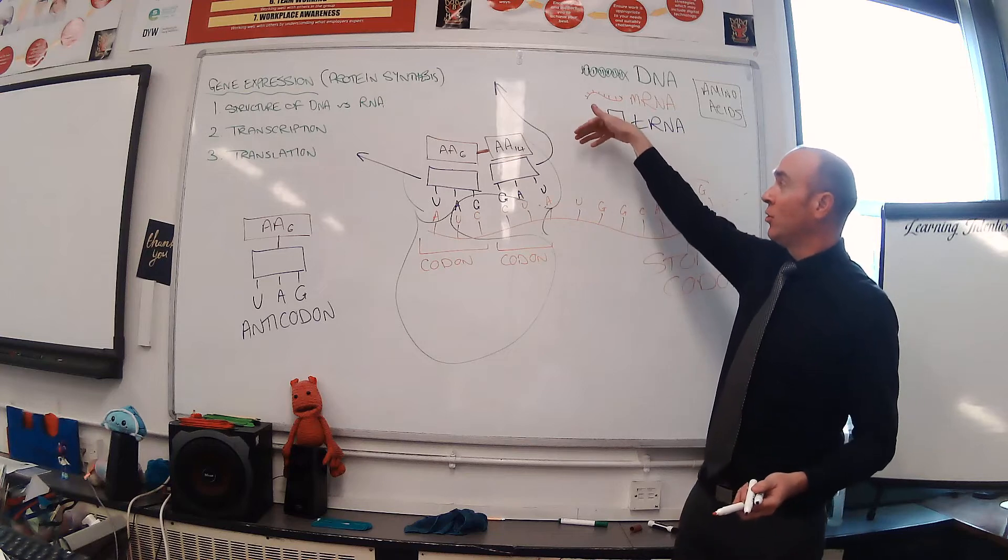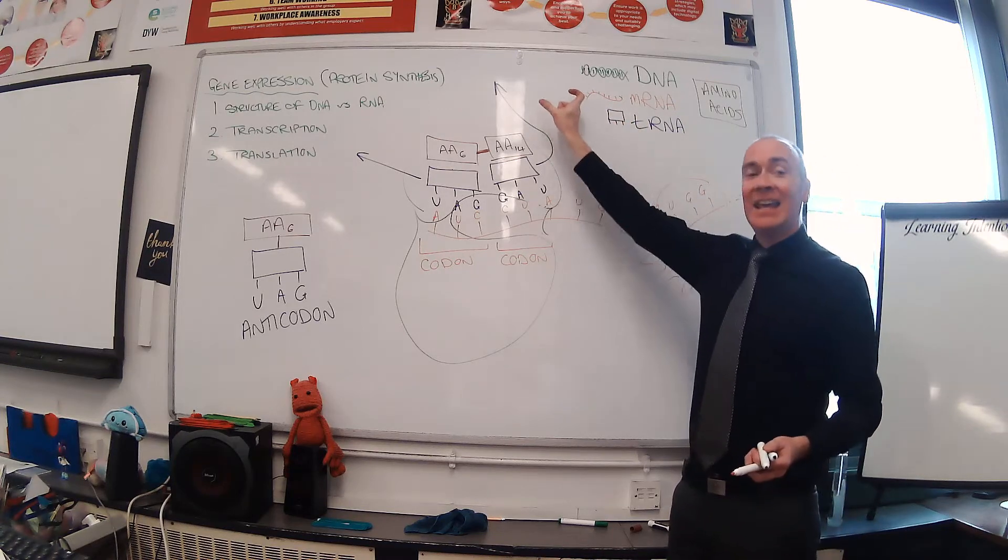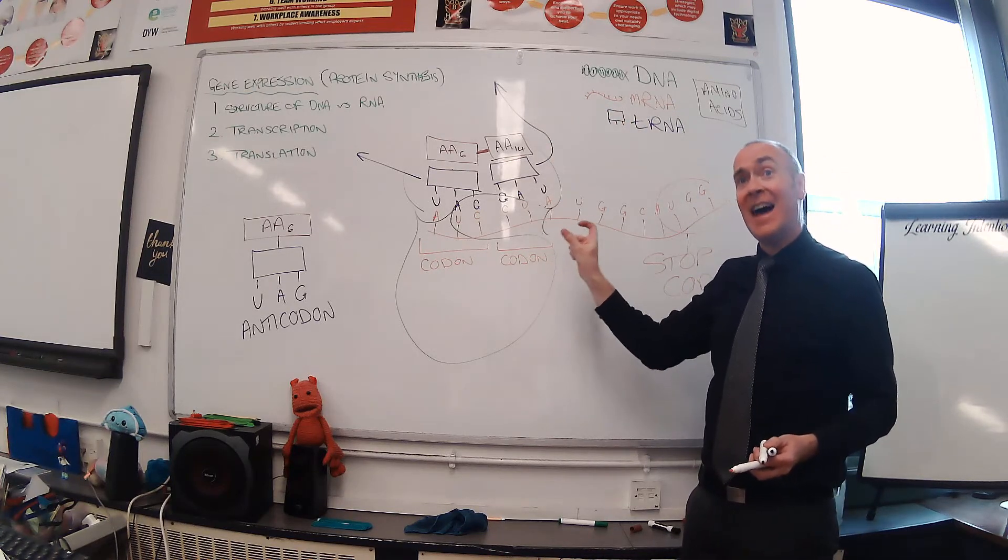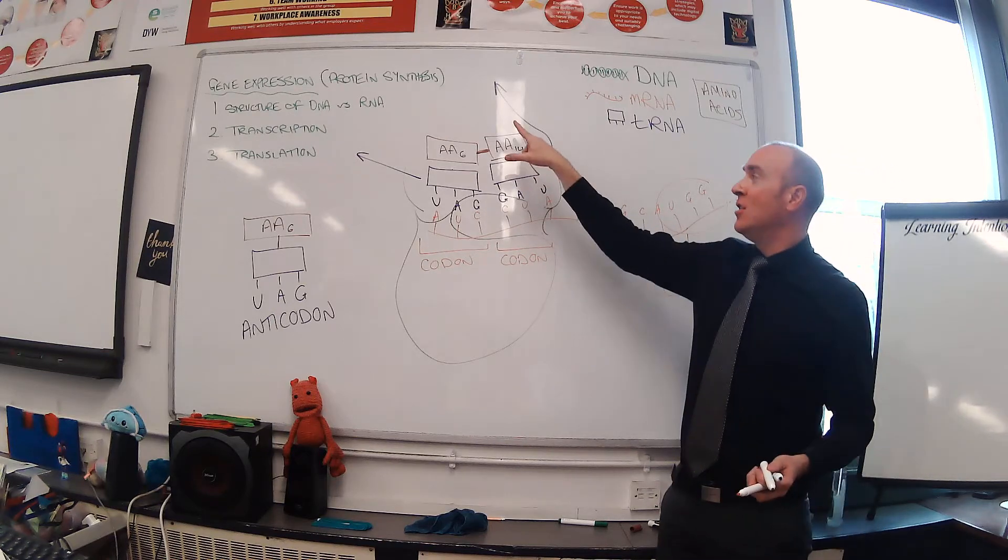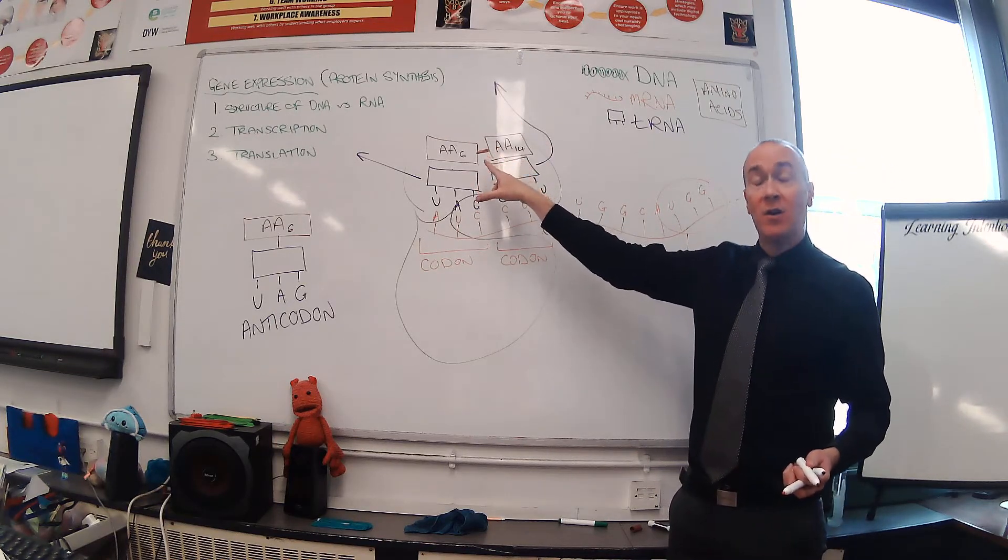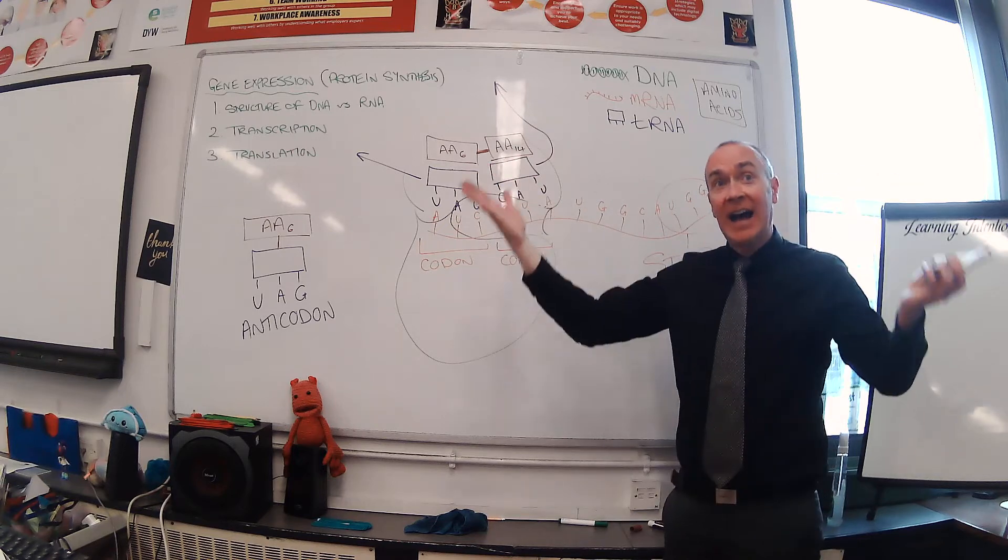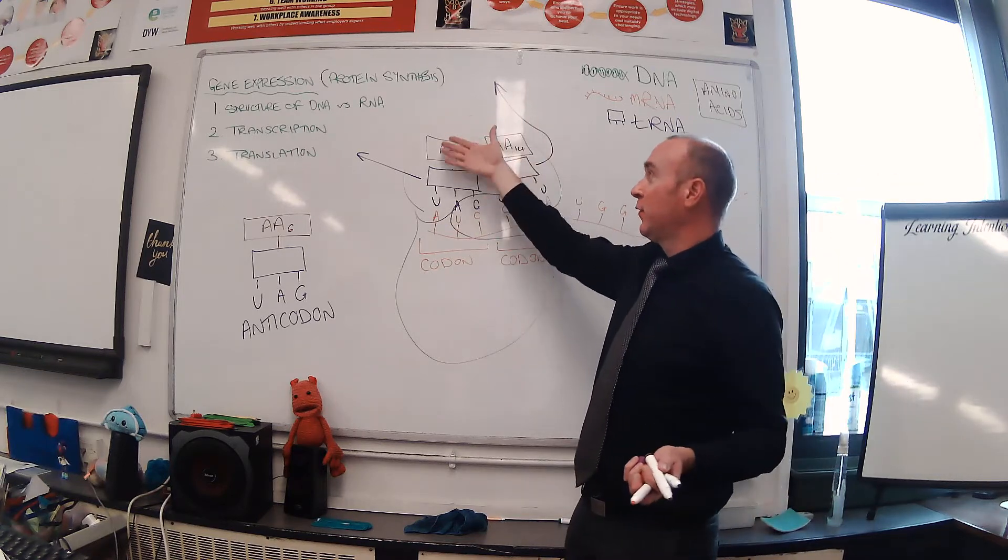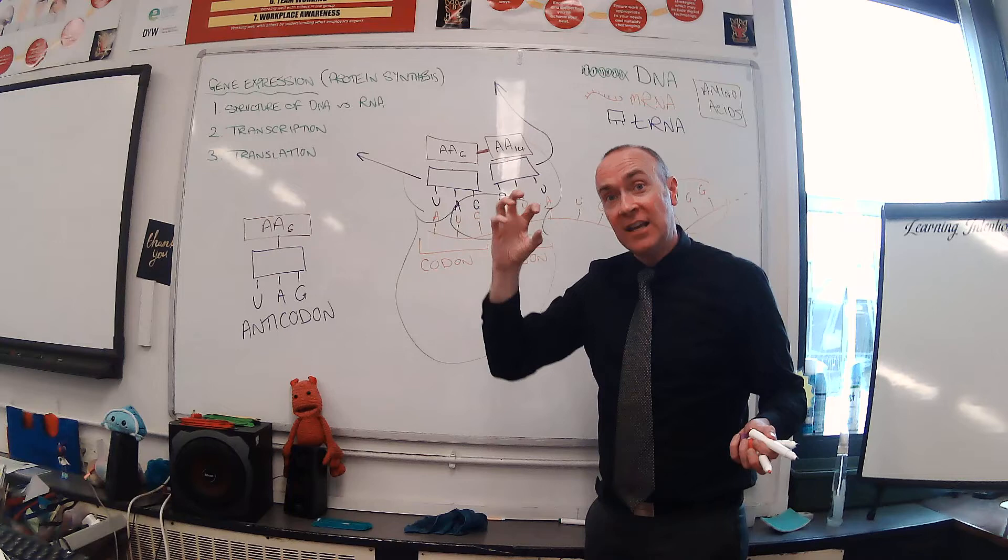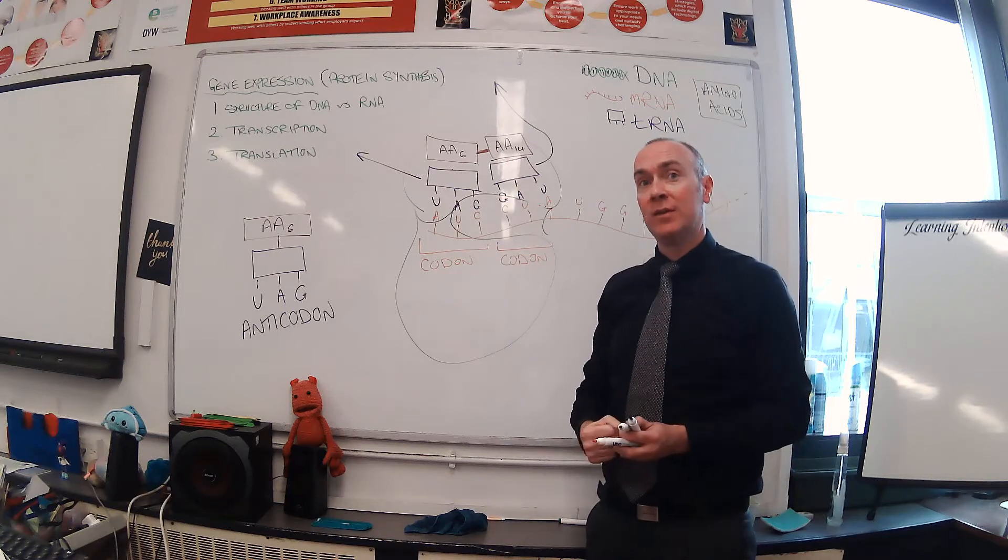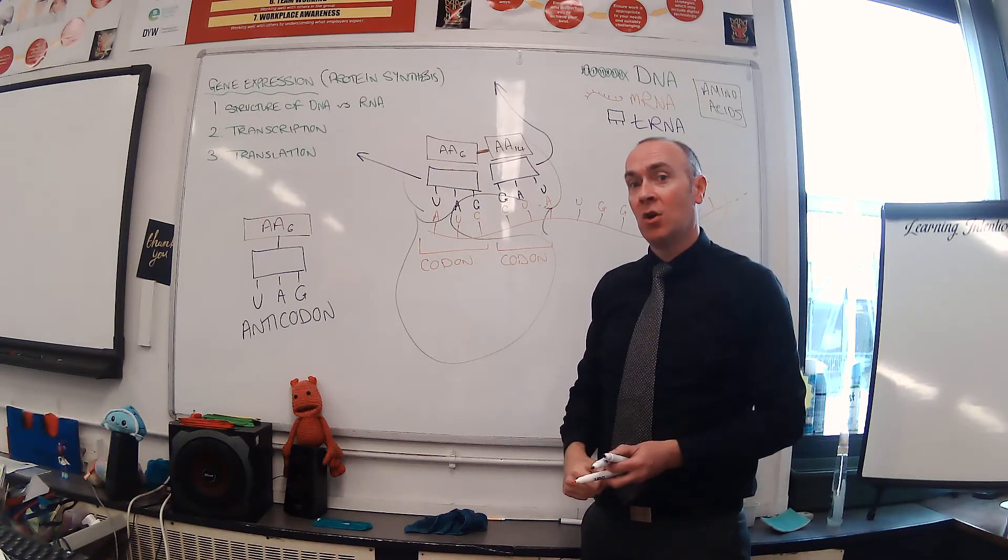Instead of a tRNA molecule coming in to join, a gap is formed. That gap causes the mRNA and the newly formed strand of amino acids to detach. And now we have a freely floating amino acid chain ready to be folded into a specific protein. That is the process of translation.